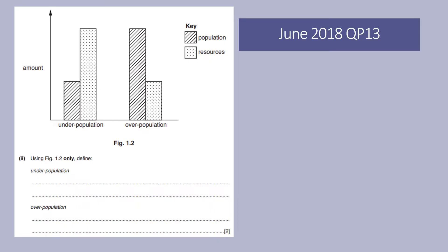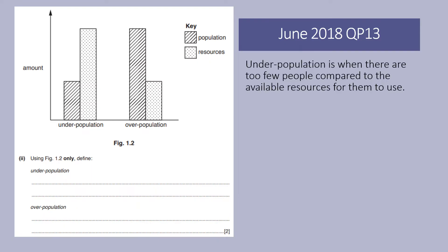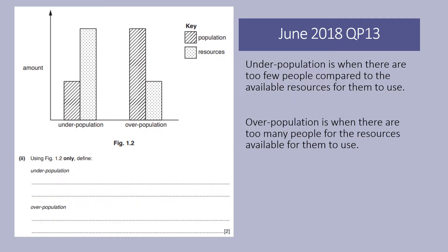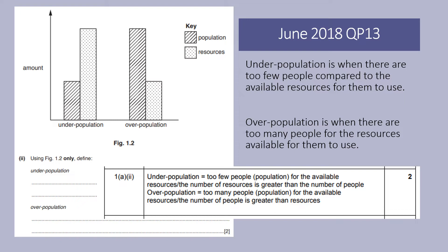I always like using past exam questions to help with the definitions. Underpopulation is when there are too few people compared to the available resources for them to use, whereas an overpopulated country is when there are too many people for the resources available for them to use. If you check out the mark scheme, the marks are confirmed right there.